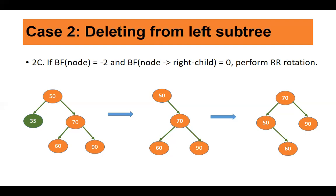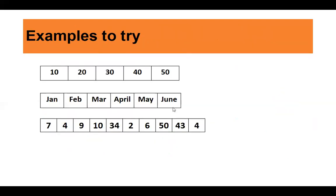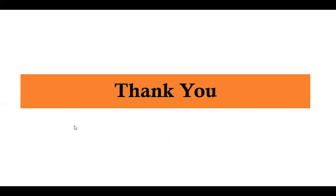I hope both cases — deleting from the right subtree and deletion from the left subtree — are clear. Try to create an AVL tree and randomly delete any key from it. When working with textual data, use lexicographic order — for example, F is smaller than G, A is smallest. Try to create three AVL trees. AVL tree is very interesting because of its advantages: searching is very fast because the height is maintained as log n. The only overhead comes during insertion and deletion because of rotations. Thank you. Stay home, stay safe.